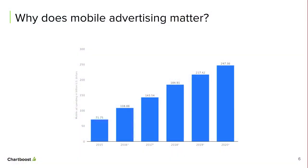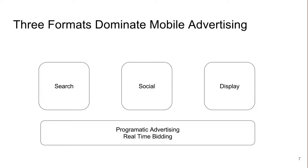Why does mobile advertising matter? It matters because there's a lot of dollars going into it. As of 2017, it's projected that about $140 billion flows globally into mobile advertising, and that number keeps going up — by 2020, close to $250 billion. Three formats dominate mobile advertising: search, social, and display. Search is dominated by Google; social includes Facebook, Twitter, and Snapchat.